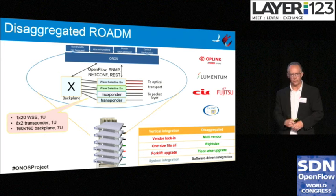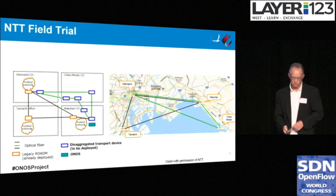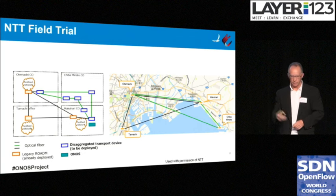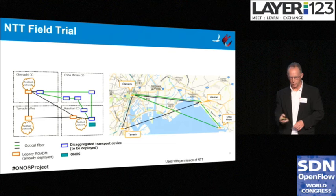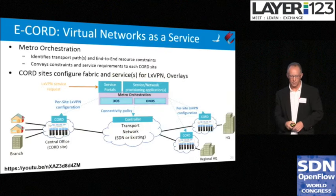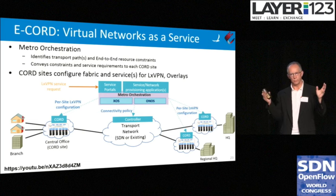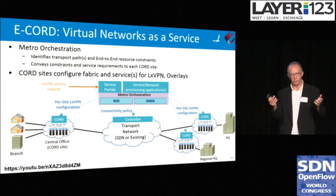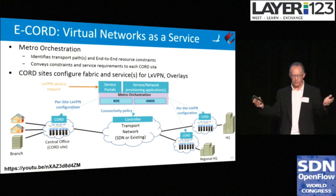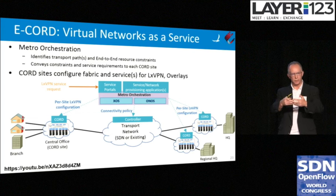Disaggregated ROADM will be used as part of an NTT field trial over the next six to nine months — you can see the map of where it is in Japan and where they're using some of the disaggregated transport devices in an ONOS-controlled network. E-CORD ties together CORD running in multiple central offices across a metro area, bringing the MEF functions you might be used to — ELAN, ELINE services — and lets you coordinate through a centralized location the ability to request L2 and L3 VPNs and overlays.